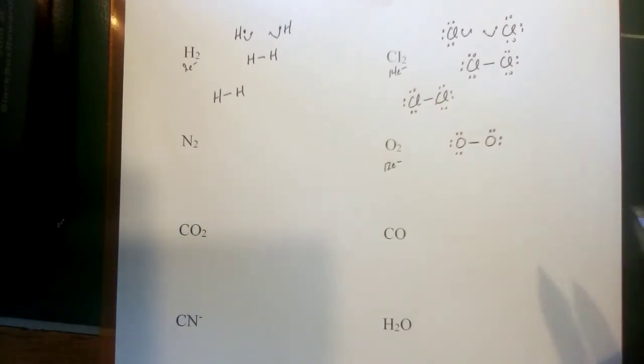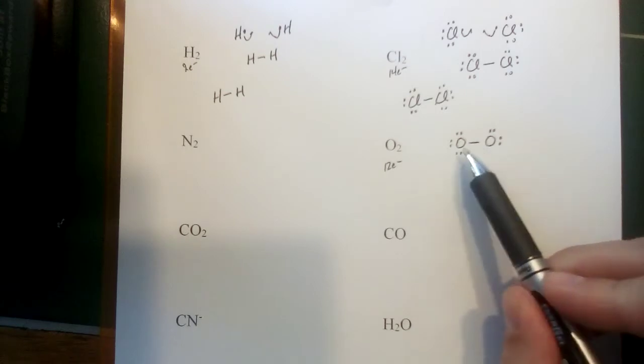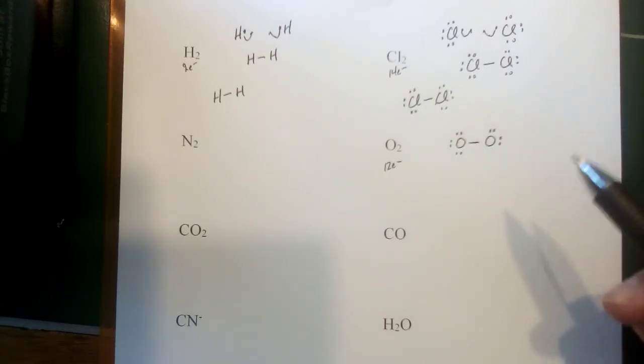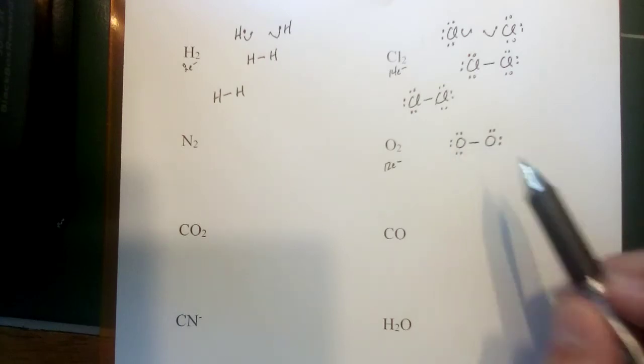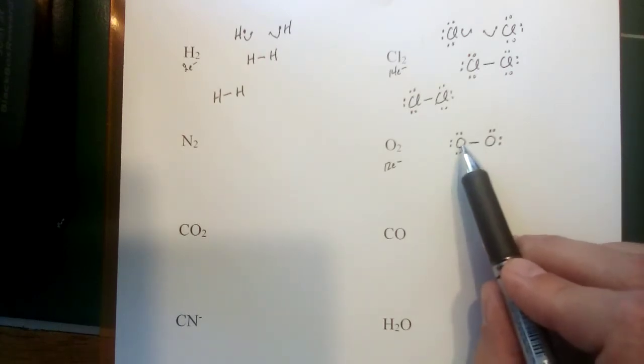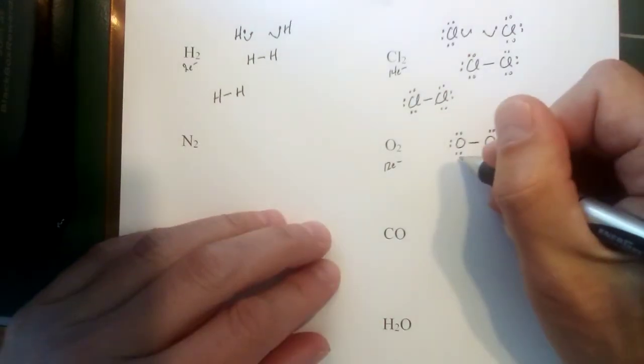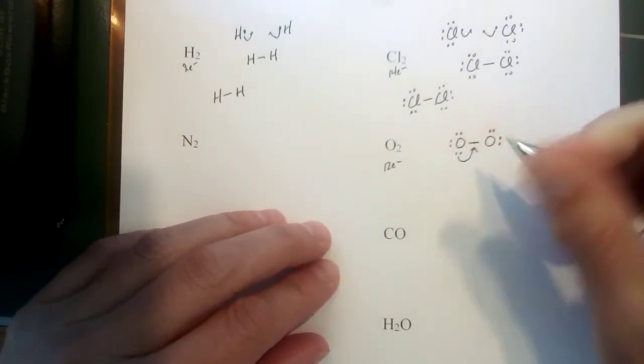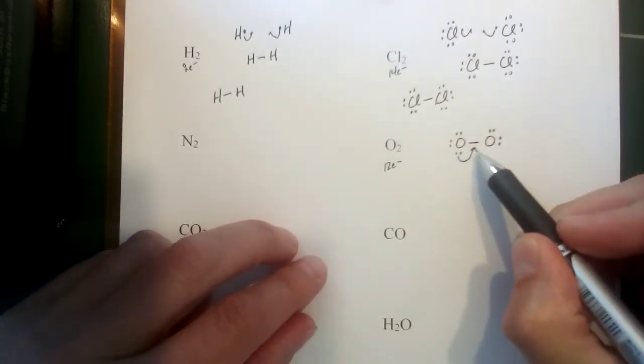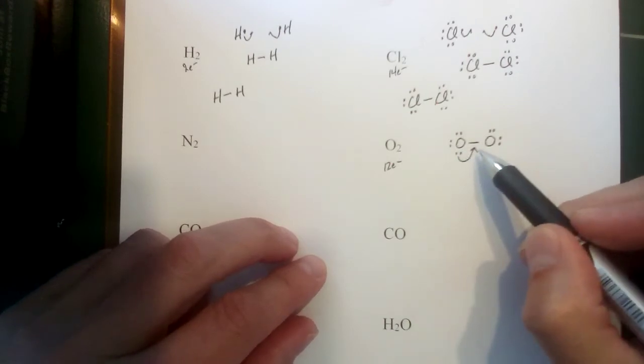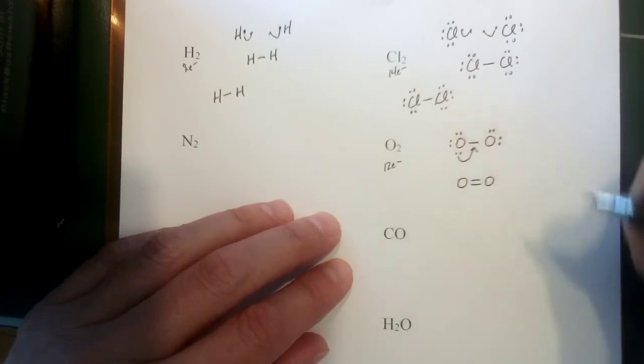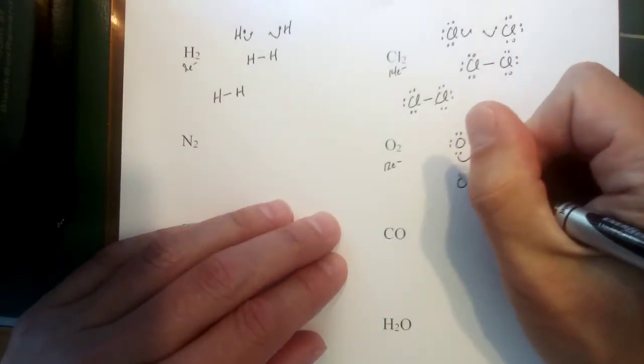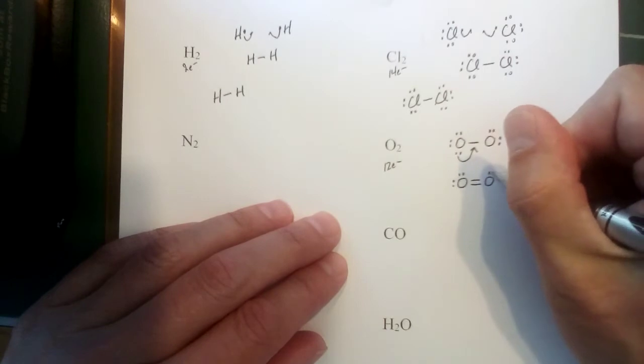Now the last step says after completing steps one through three, if the central atom has fewer than eight electrons, try adding double or triple bonds. We don't really have a central atom in a diatomic molecule, but that wording still applies. We need to add more bonds here to make sure both oxygens have eight electrons. The one on the left here has eight, the one on the right only has six. What we could do here is share. If I take a pair of electrons that is just associated with one oxygen, but I share them so that they're contributing to both oxygens, I would get a second bond. So there would be two sets of bonding electrons, or a double bond between the oxygen atoms, and then each oxygen still has four electrons on it.